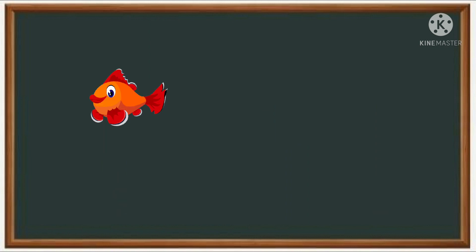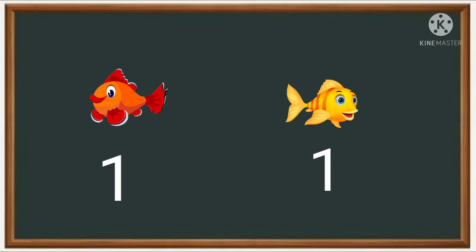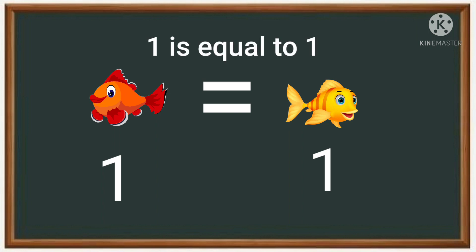Now we have one fish and one fish. So we have equal fish on both sides — one is equal to one. I hope you understood, kids. Thank you.